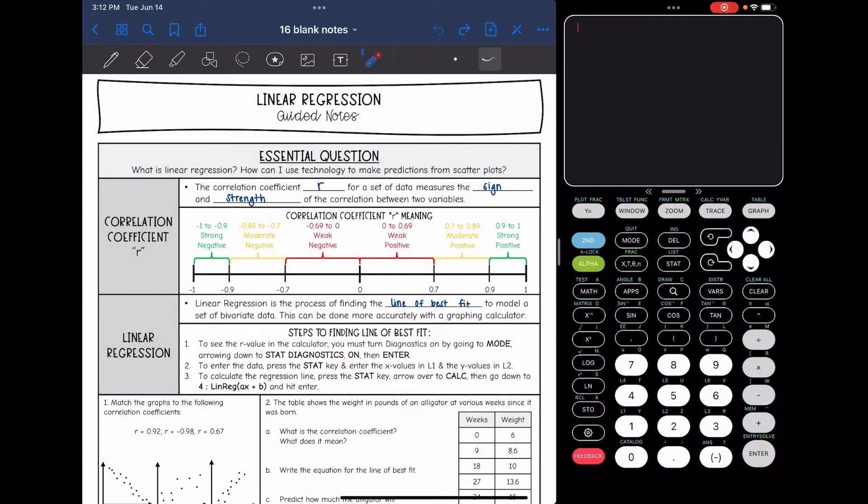Let's talk about what the correlation coefficient is first. This is something that your calculator will tell you. It is the letter R, and it measures the sign and the strength of the correlation between two variables. R is going to be a number between negative one and positive one.